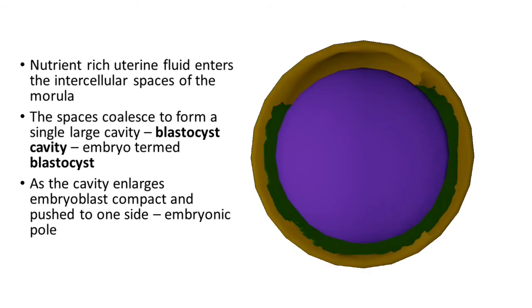First the nutrient-rich fluid enters the intercellular spaces, and then these fluid-filled spaces coalesce to form a single large cavity called blastocyst cavity. And at this stage we give a new name to the embryo: blastocyst.